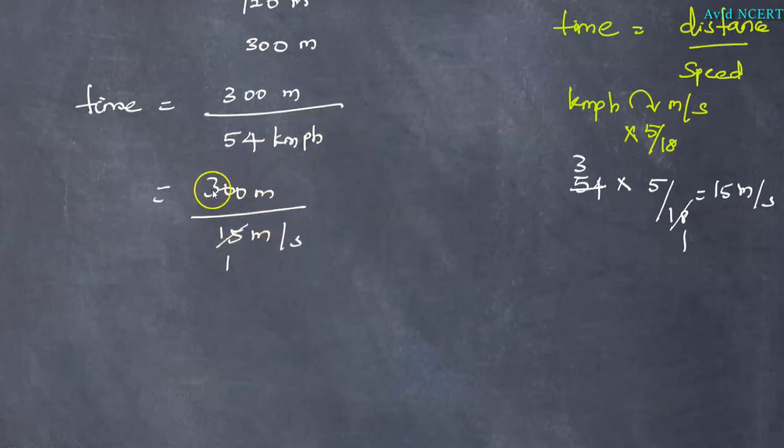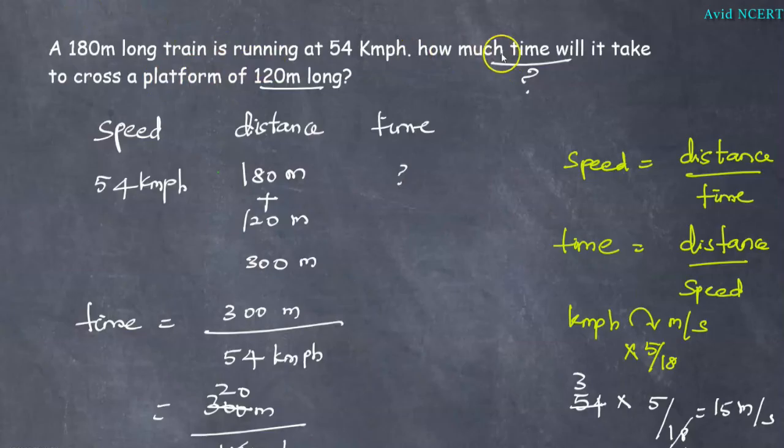So 15 times 2 is 30 and this is 0. Therefore time equals 20 seconds. The time taken to cross a platform of 120 meter long is 20 seconds.